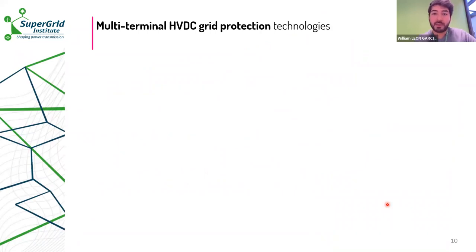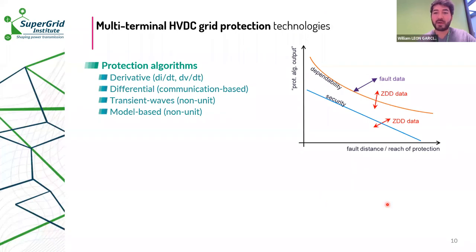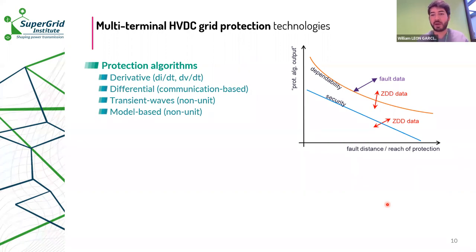Regarding MTDC protection technology, algorithms implement the protection strategies. Known algorithms today include derivative-based algorithms using rate of change of current or voltage, communication-based algorithms, transient wave analysis, and model-based analysis. The choice of algorithm depends on fault distance, fault resistance, and other system characteristics. Each algorithm is evaluated in terms of dependability — the capability to detect faults inside the protection zone — and security — the ability to ignore faults outside the zone.